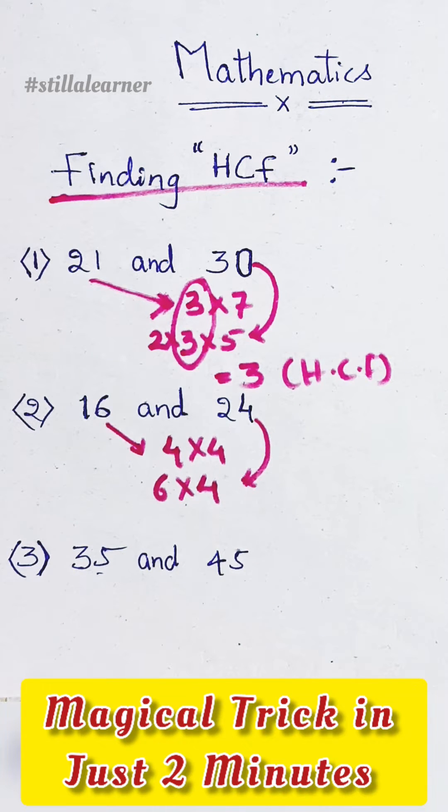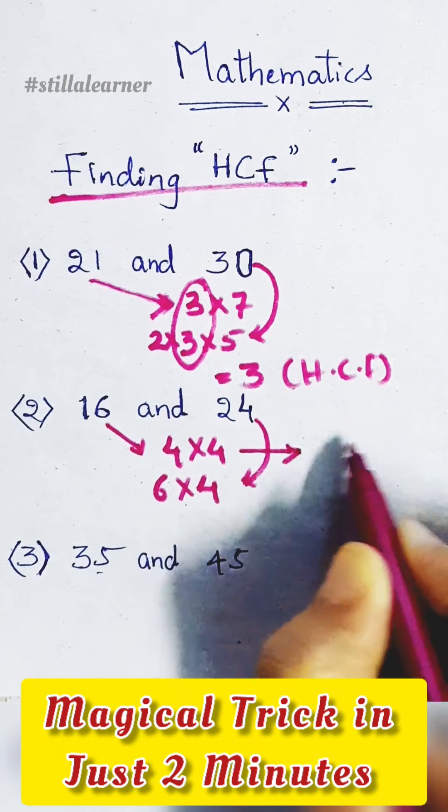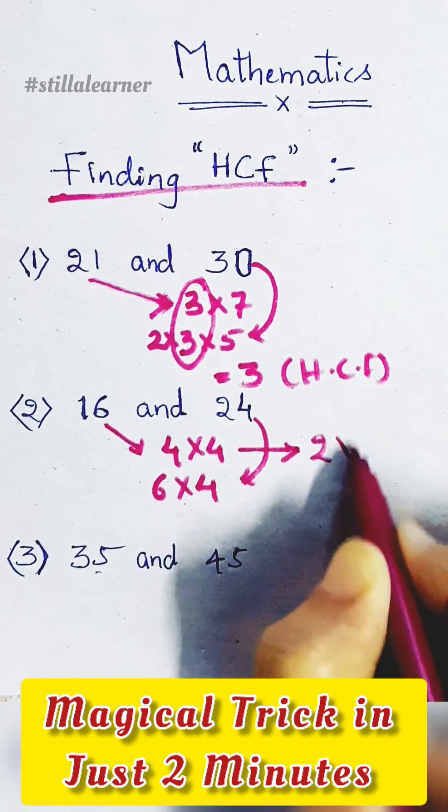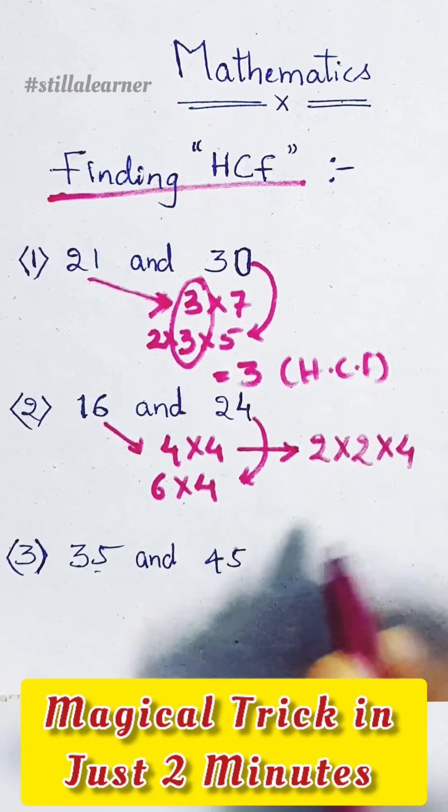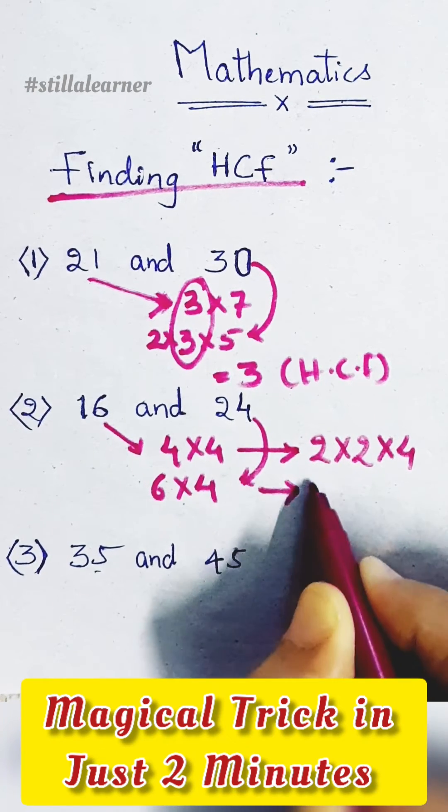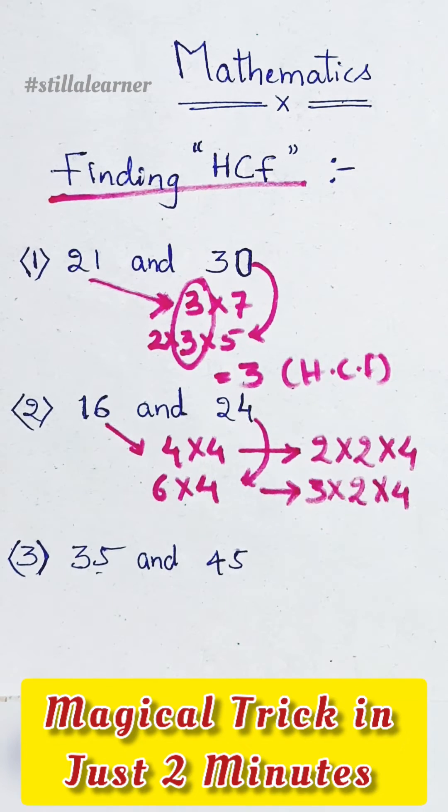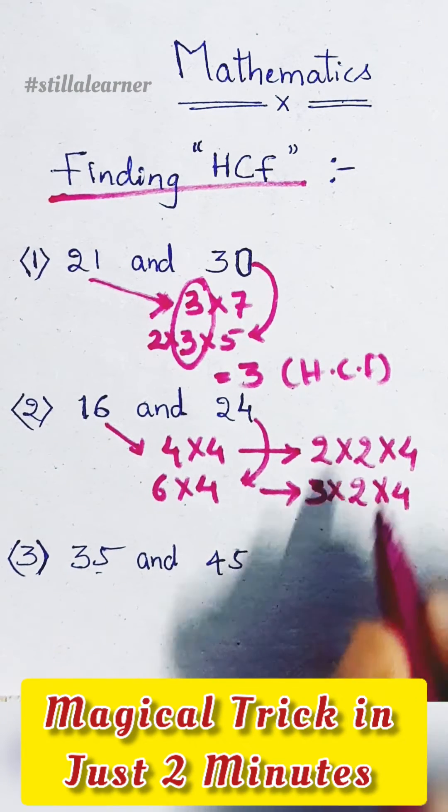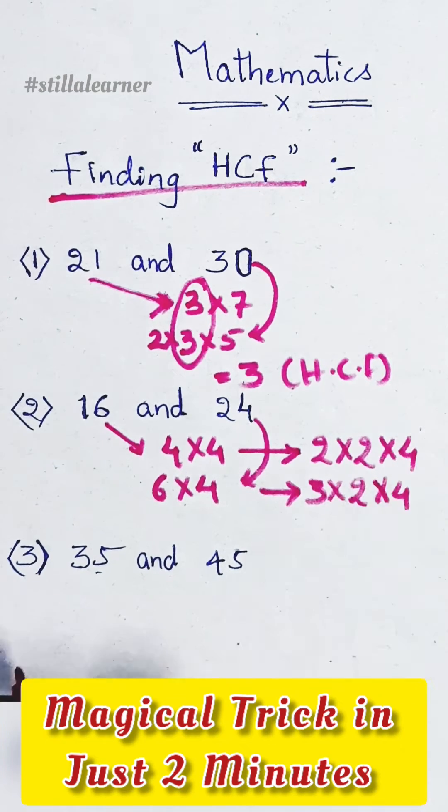Why? Because there is another hidden factor in these numbers. So always start from table 2: 2 into 2 into 4, and then 3 into 2 into 4. Now you can see clearly which are the common factors.